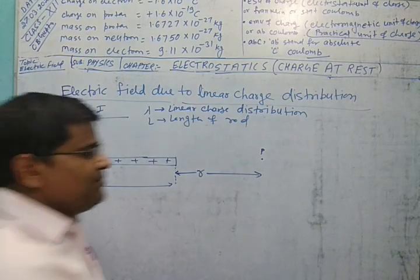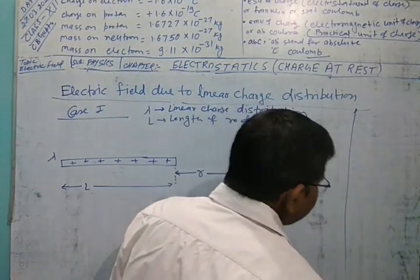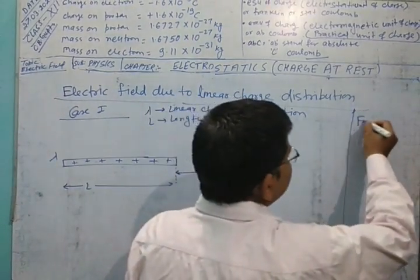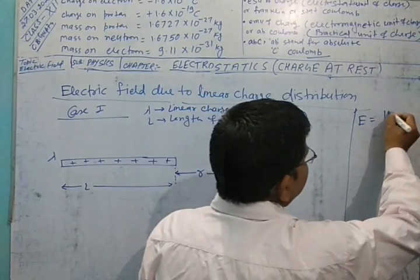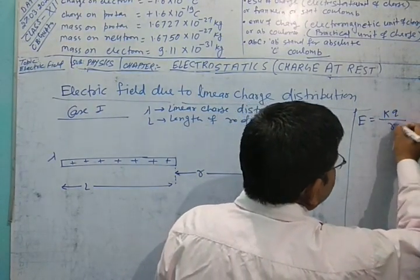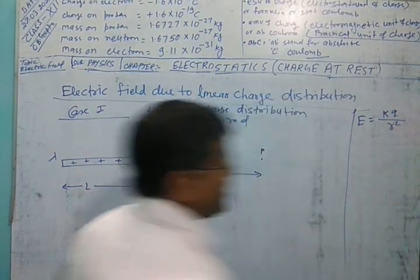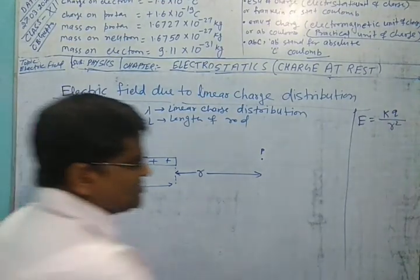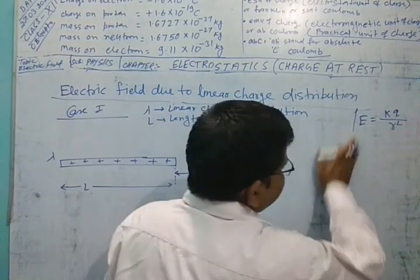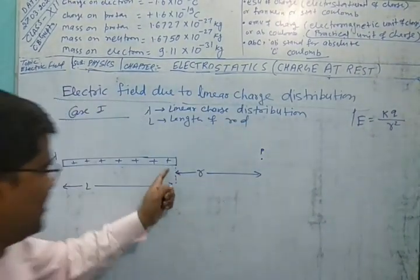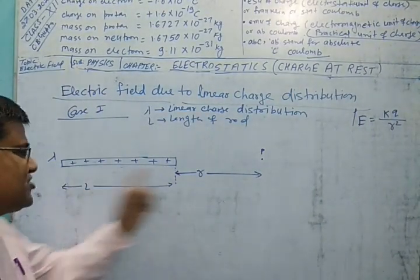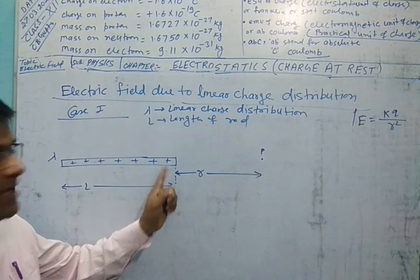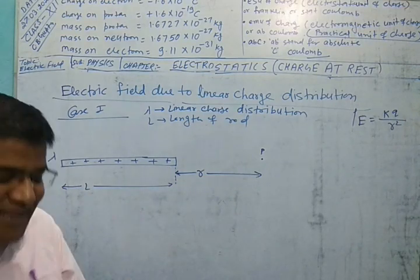In the previous lecture, we discussed the electric field due to a point charge: KQ by R squared. But here the source charge is linear, not a point charge.